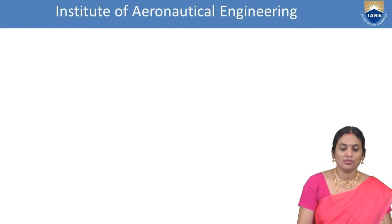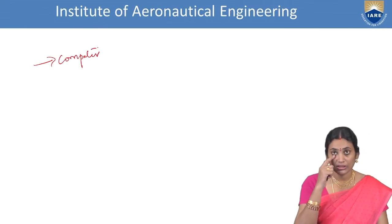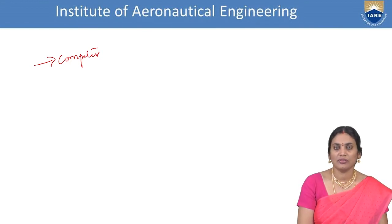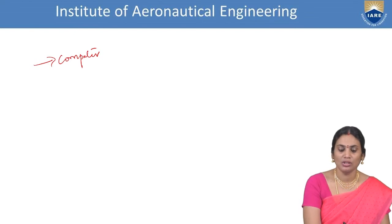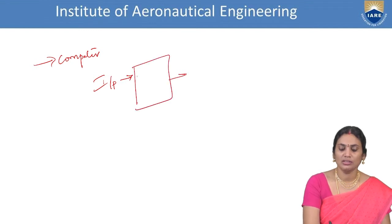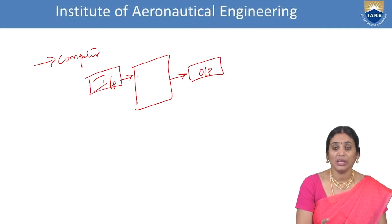We started with the basic definition of a computer. A computer is a device which accepts input, processes the task, and presents the output. For this we have an input device connected with a processor, which presents the result to the output device. Input and output are the basic essential components which make the system or computer get activated.